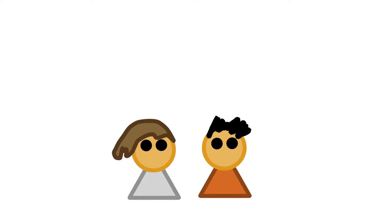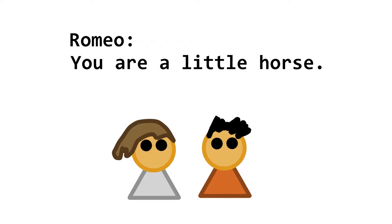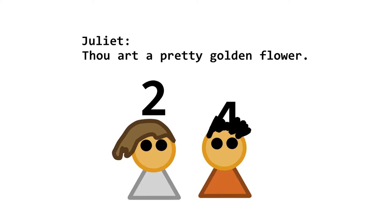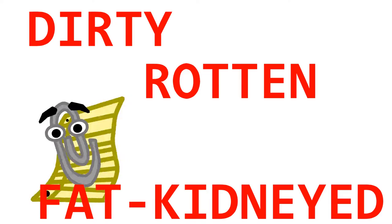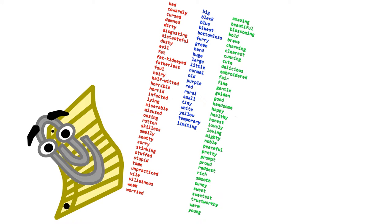Attaching adjectives to nouns multiplies their value by two. So if Romeo says 'you are a little horse' to Juliet, Juliet's value will be two. If Juliet tells Romeo 'thou art a pretty golden flower,' Romeo will be given the value of four. Negative adjectives, like dirty, rotten, and fat-kidneyed, also exist, but they act just like regular adjectives. Also, like nouns, you are limited to just a few adjectives from a list.